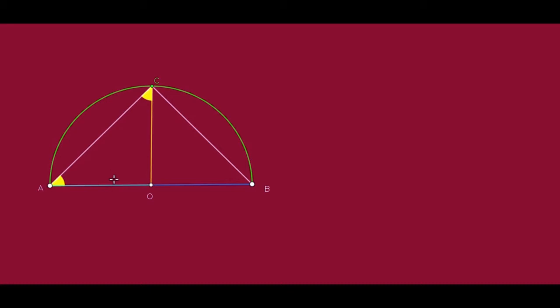Since OA equals OC, triangle AOC is an isosceles triangle, so these two base angles are equal. Let both angles be equal to X. Now OB is a radius and OC is another radius. Radii of the same circle are equal, so OB equals OC. Therefore triangle OBC is also an isosceles triangle, and its two base angles are both equal to Y.